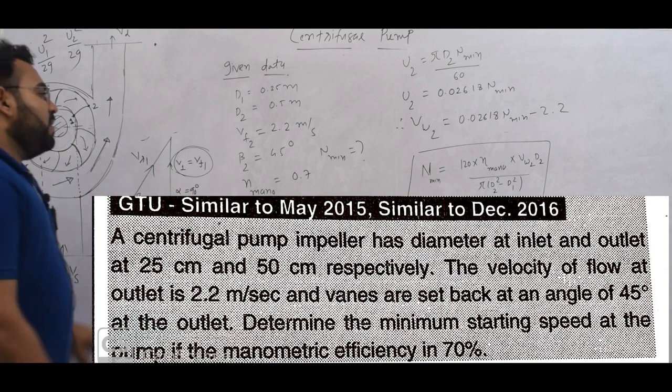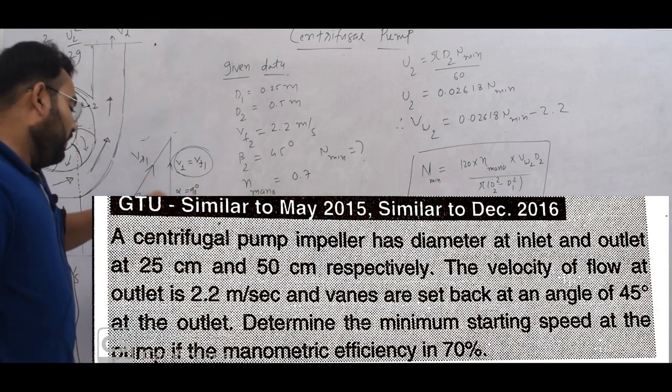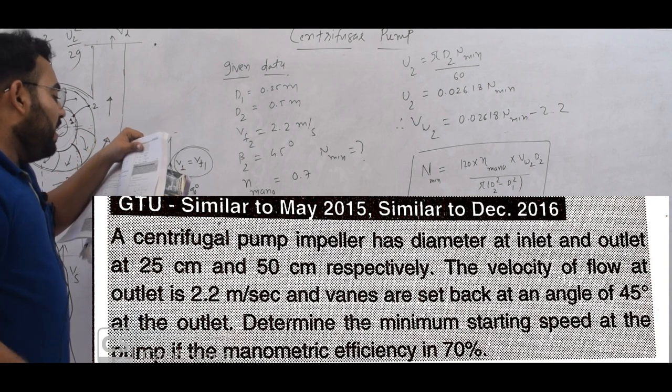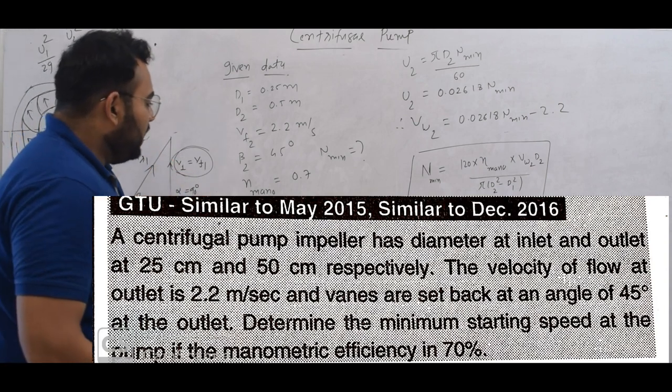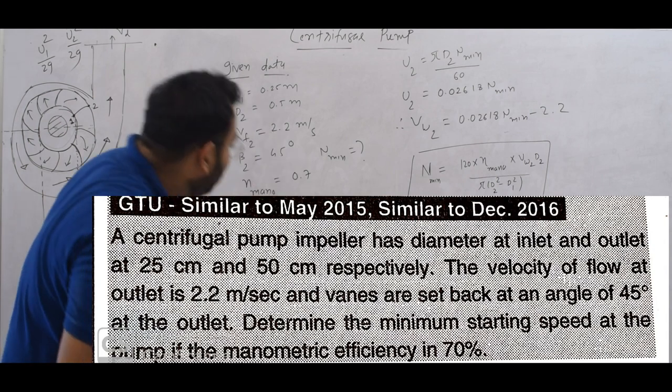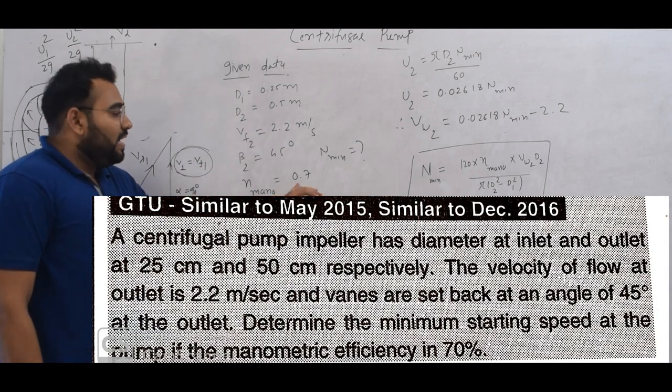Determine the minimum starting speed. So we have to find N minimum. The manometric efficiency is 70%. So N mano is 70%, that means 0.7. Let's solve this example.